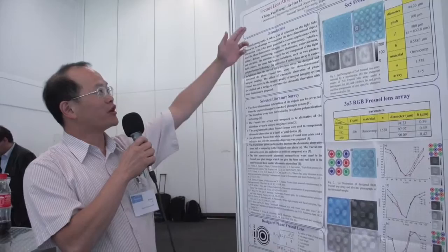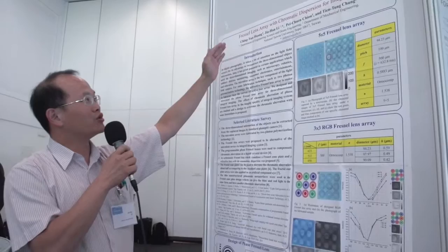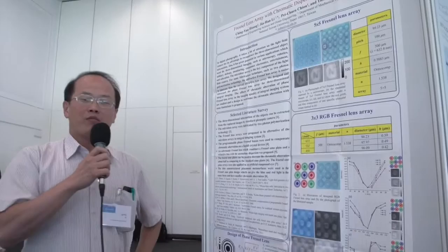It is my great pleasure to present our research at ICC Berlin. Our research topic is a Fresnel lens array with chromatic dispersion for integrated imaging. I am Jahan Li, and this work is done by my students, Chun Yin, Huang Pei-Chun Cho, and my co-operator, Tian Dong-chong.